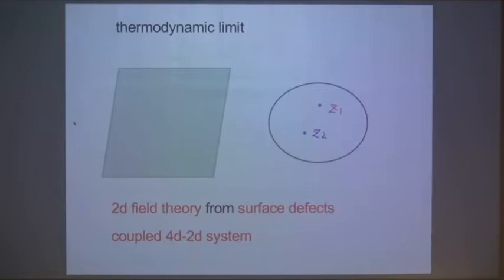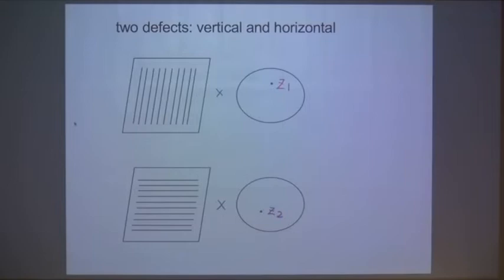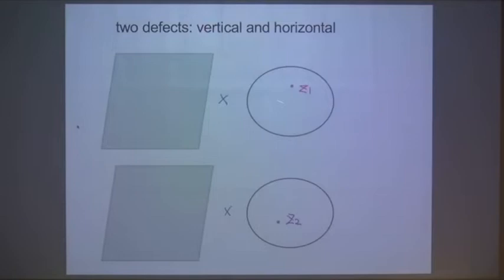There are two points, meaning two surface defects. This is easy to see going back to the original integrable lattice models: there are two different types of Wilson lines, one horizontal and one vertical, located at different points on the spectral curve at z1 and z2. If you take the limit, each is turned into a surface defect located at different positions z1 and z2. So in this process we have two surface defects.